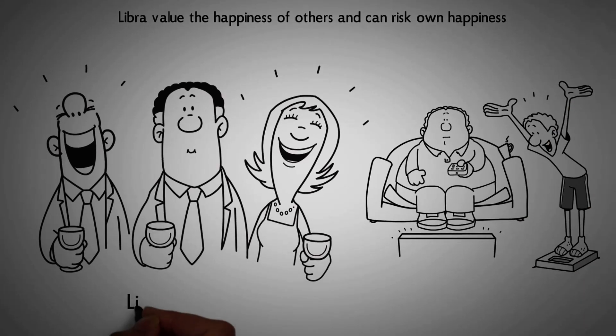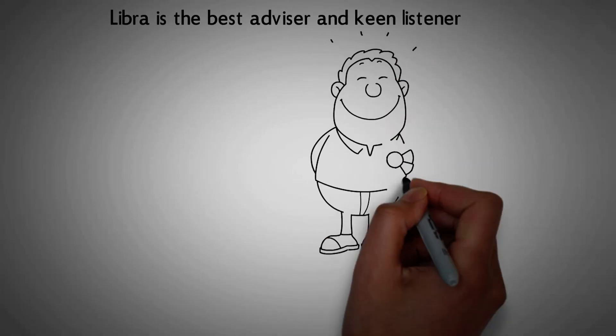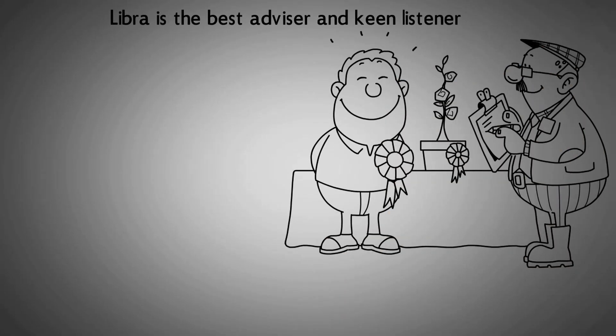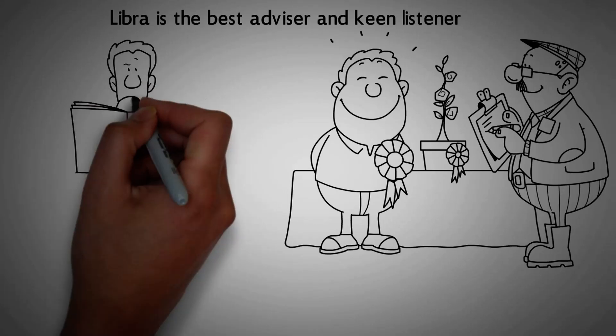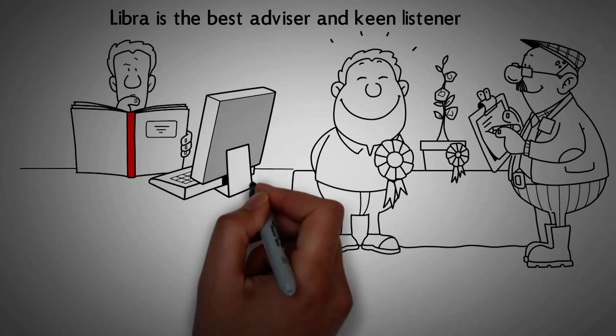Number 17. Libra is the best advisor and keen listener. Libra is a caring friend and listens when you need them the most. They offer informed advice. Their observant nature helps them to see things from all perspectives.